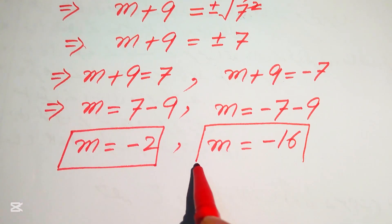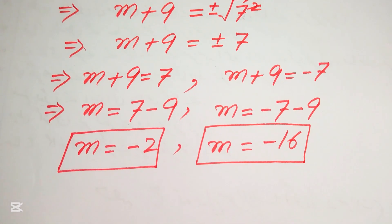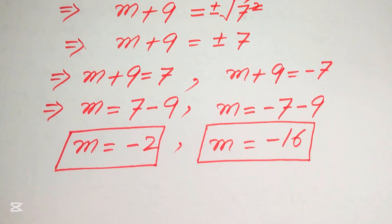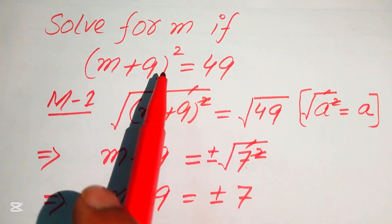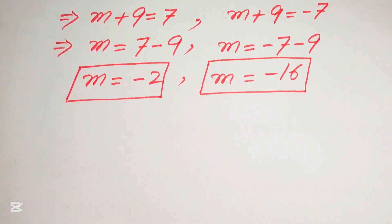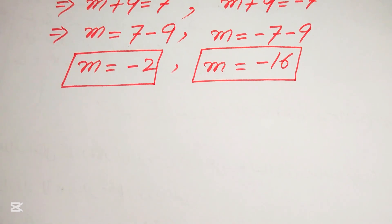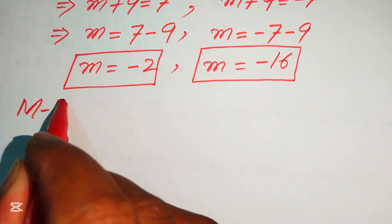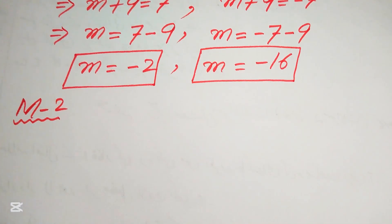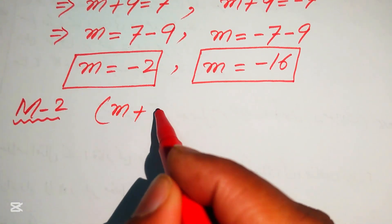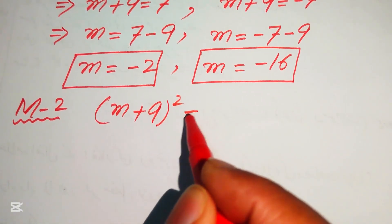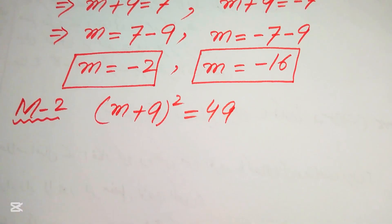These are the two final roots from method one, because the given equation is second order, it has two roots. Now we move to method two — we copy down the given equation: (m + 9)² = 49.